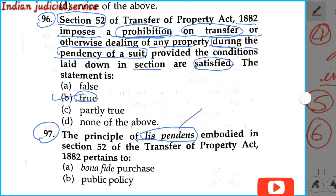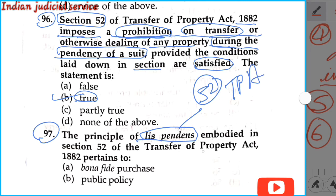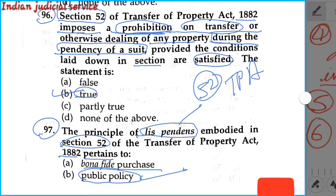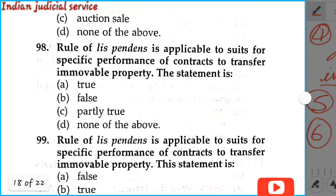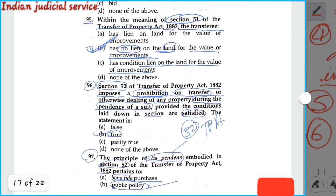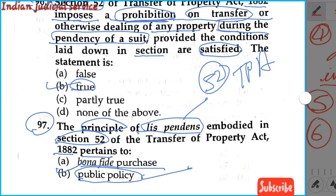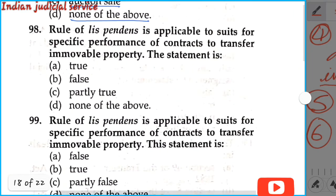Question number 97: The principle of Lis Pendens embodied in section 52 of the Transfer of Property Act 1882 pertains to — option A: bona fide purchase; option B: public policy — this is very important; option C: auction sale; option D: none of the above. Our answer is option B — public policy. The principle of Lis Pendens in section 52 pertains to public policy.